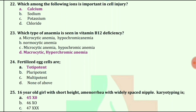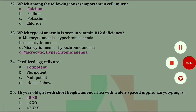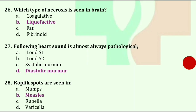16-year-old girl with short height, amenorrhea, and widely spaced nipples. Karyotyping is 45X0. Which type of necrosis is seen in brain? Answer is liquefactive.